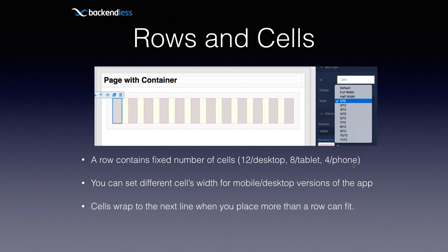This is important because, as you will see in the demo, it has a direct impact on what the application looks like on desktop, tablet, and phone. You can have more than 12 cells in a row — when the room runs out, the next cell simply wraps to the next line in the same row. A single row can have multiple lines, each filled with the cells you place there.